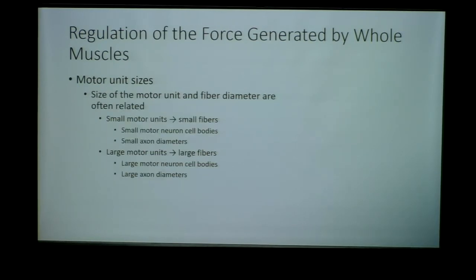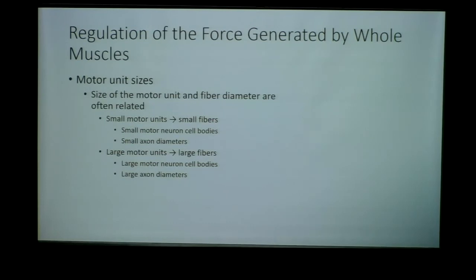Another aspect of motor unit distinction is the axon diameter. Smaller motor units have smaller cell bodies and smaller axon diameters, whereas larger motor units have larger cell bodies and larger axon diameters. For example, the sciatic nerve is a huge nerve, which tells us it's innervating big powerhouse muscles for strength. Nerves innervating the muscles of the fingers, eyes, or toes are smaller in axon diameter, which reflects the fiber diameter and number of fibers attached to those units.